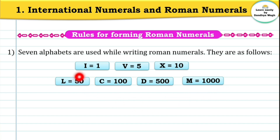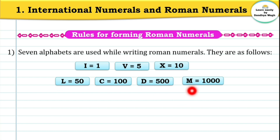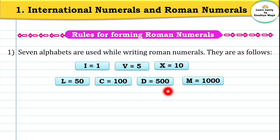Now, I, V, and X you already know — I means 1, V means 5, X means 10. To remember the remaining numbers, here is a trick: LCD. Everyone knows LCD TV! So remember LCD — L means 50, C means 100, D means 500 — and M means 1000. How easy is that!